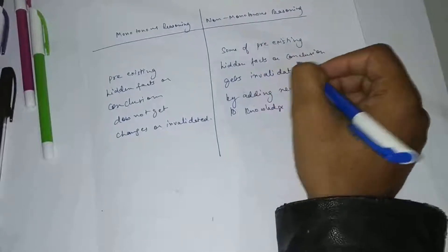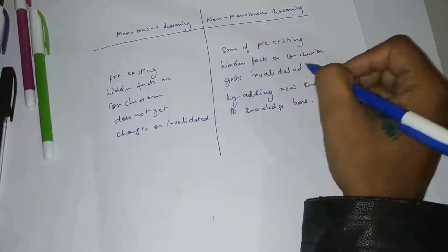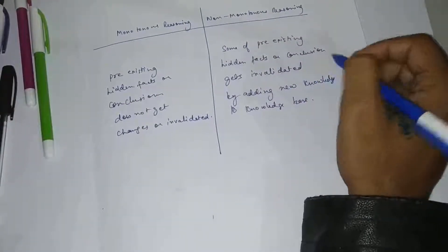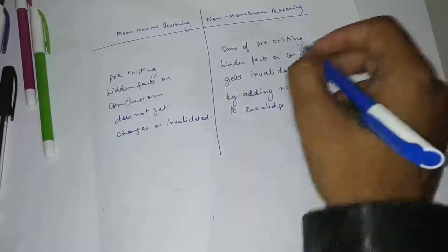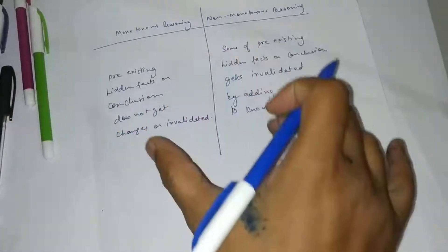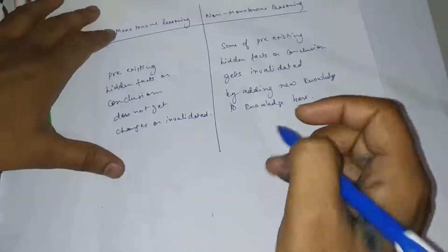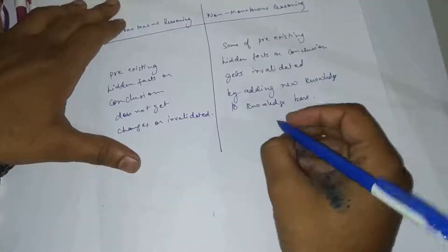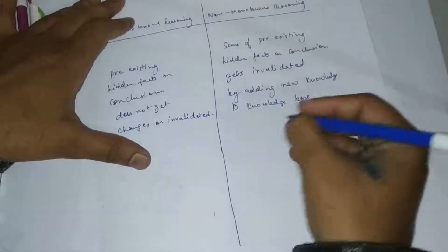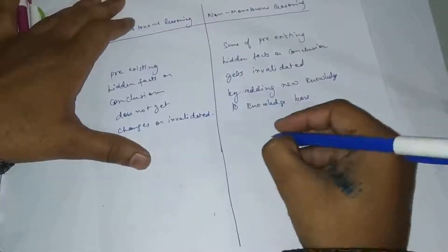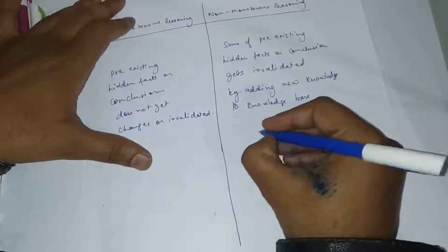In non-monotonous reasoning, some pre-existing hidden facts or conclusions get invalidated by adding new knowledge to the knowledge base. I will give you an example in which this will be clear. This is a very easy concept. One example that I have noted in my last year's videos - I will take that example.